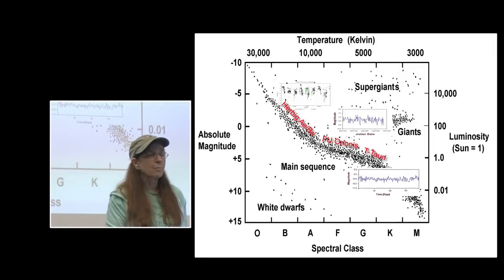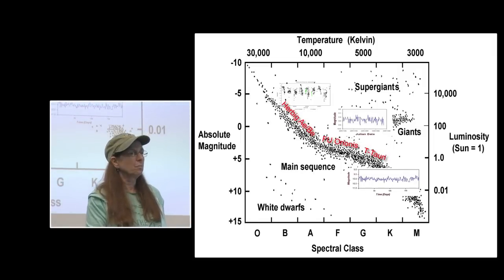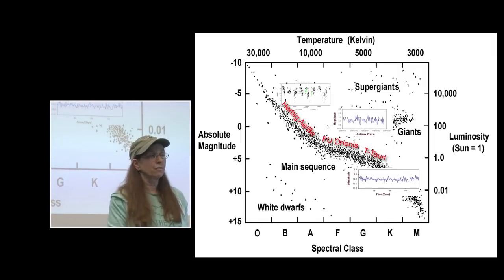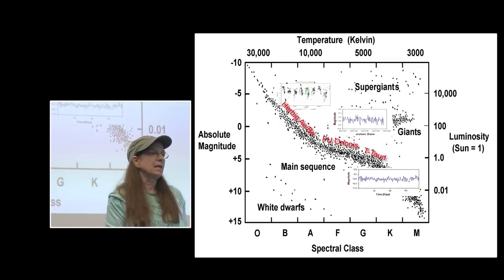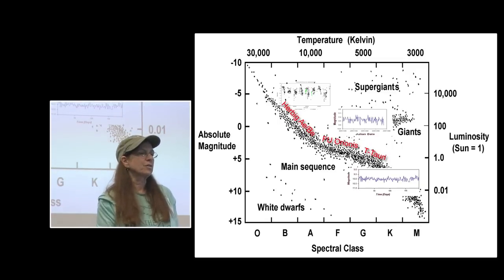As far as the HR diagram goes this year, most of the emphasis is on those protostars - the three types of protostars: the T Tauri, the FU Orionis, and the Herbig AE objects.